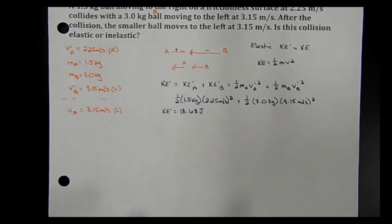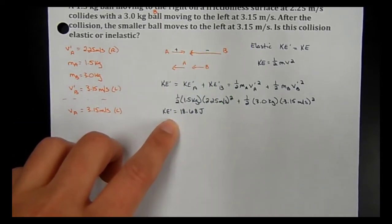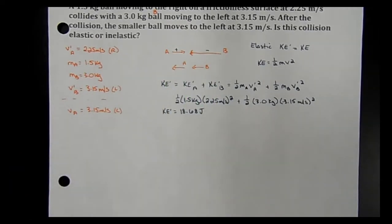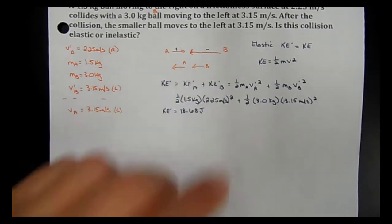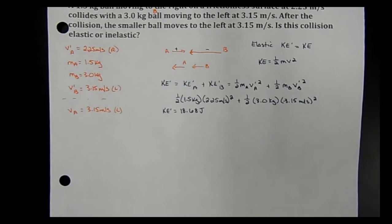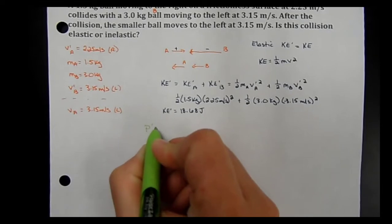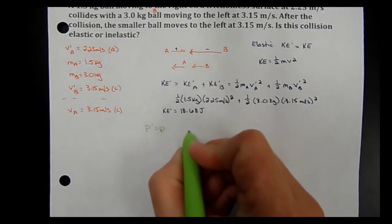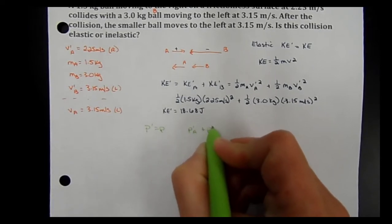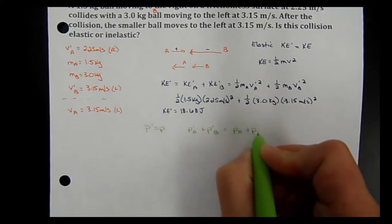Our initial kinetic energy is 18.68 joules. To see if that equals the final kinetic energy, we need the final velocity of both balls. We know the final velocity of A, but not B. However, momentum is always conserved, so the initial total momentum equals the final total momentum: p_Ai + p_Bi = p_Af + p_Bf.